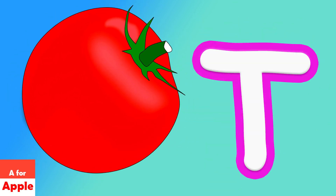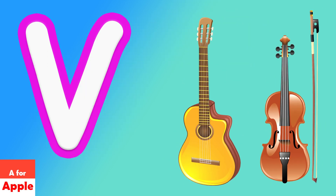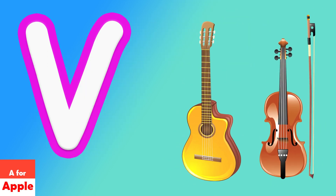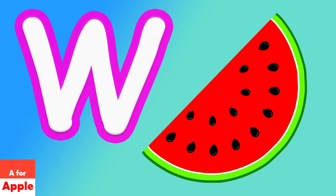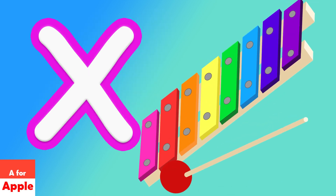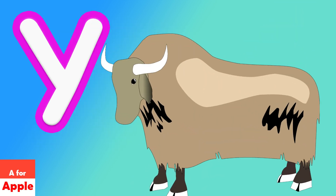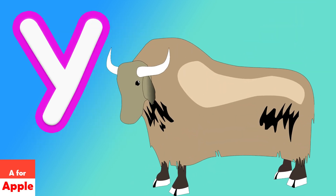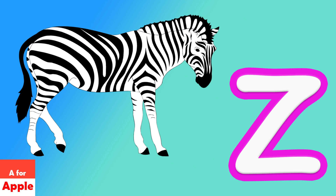T for tomato, U for umbrella, V for violin, W for watermelon, X for xylophone, Y for yard, Z for zebra.